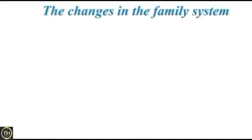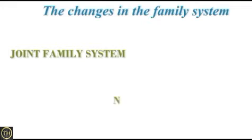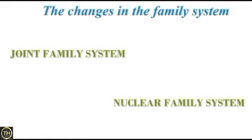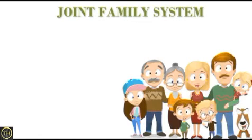Next, we will see about the changes in the family system. The family system has changed as time goes by. As a result, there are two types of family system that have formed: the joint family system and the nuclear family system. We will learn about each in detail, starting with the joint family system.